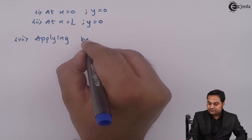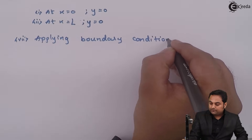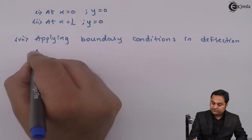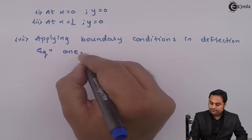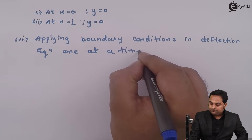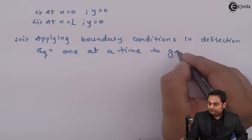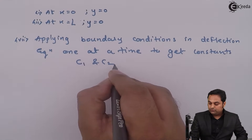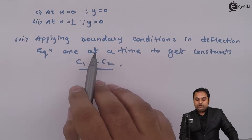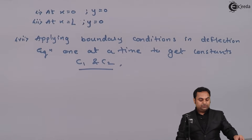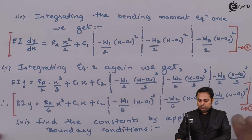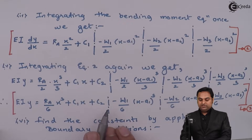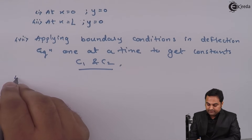The next step is applying boundary conditions in the deflection equation one at a time to get constants C1 and C2. Once we know the boundary conditions, we put the values in the deflection equation — which is equation number three — to get the values of C1 and C2.